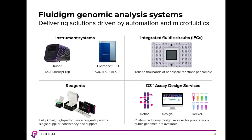Looking at the Fluidigm portfolio of genomic analysis systems, it really occupies four sectors. We have our instrument system, the Juno, which is our universal controller and is used for library preparation for next-generation sequencing. We have the Biomark system, our universal qPCR system. We have our integrated fluidic circuits, which are the device form for all reactions done on Fluidigm instrument systems. We make reagents used with the integrated fluidic systems, and we have our design service D3, which can create custom designs for use with our reagent technology.